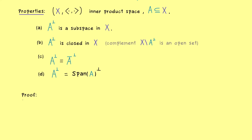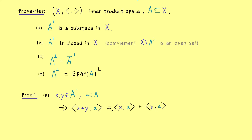Now we write down a proof for these properties, and it turns out this is not hard at all. For statement (a), we take any two vectors from A-perp, form their sum, and put it into the inner product combined with an arbitrary a in A. The properties of the inner product allow us to pull out the plus sign, giving two terms. Both are zero by the assumption that x and y lie in A-perp — meaning they are orthogonal to every a in the set A. Hence one property of a subspace is already satisfied: we cannot leave the subspace under addition.